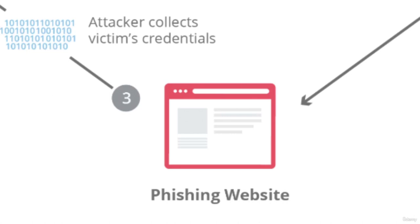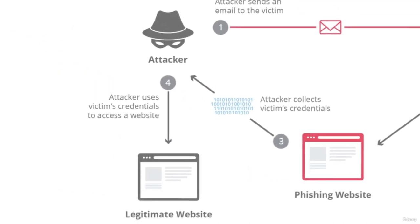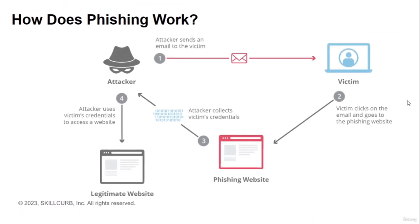If the attacker wants your Facebook access, the page will look similar or in some cases exactly like the real website page. If the victim enters their credentials on this fake phishing website, the attacker will then collect this information — which in the Facebook scenario would be your ID and password — and use it to log in on the legitimate website. That's how phishing works, and this is one use case of phishing. There are many other techniques as well.